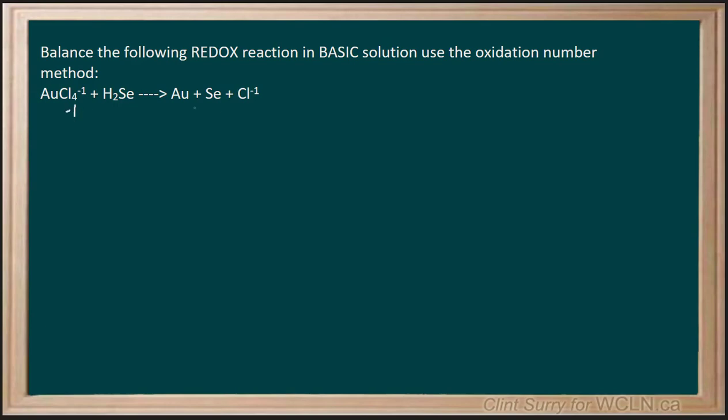We know the chlorides are generally minus one and they haven't changed. If the chloride is minus one and we have four negatives and overall it's minus one, that means this gold is plus three. Gold over here is an element, so it'll be zero.